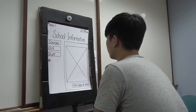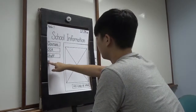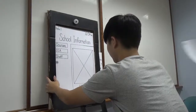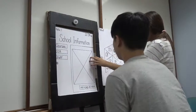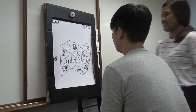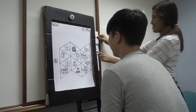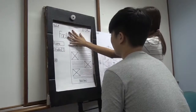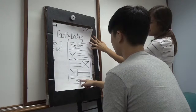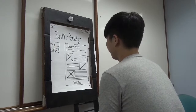Next we will move on to task 3 — book a room in the library. Okay. Hamburger button. Thank you. Let's see. Alright, thanks, that was very helpful.